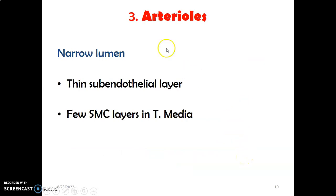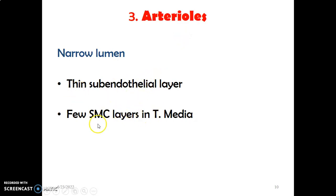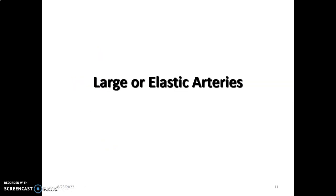From arteries, blood goes to arterioles. Arterioles have tunica intima, media, and adventitia as described. The lumen of arterioles is narrow. The subendothelial layer in the tunica intima is thin, and the tunica media has very few layers of smooth muscle cells. Those are the distinctive features of arterioles.